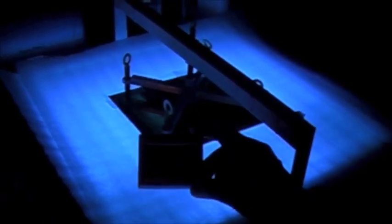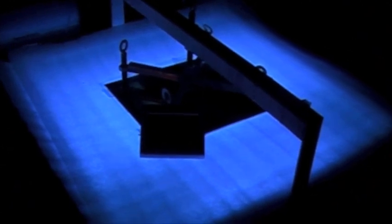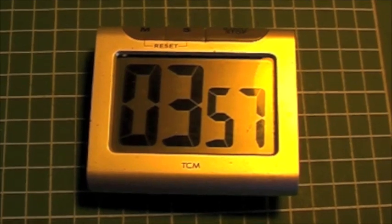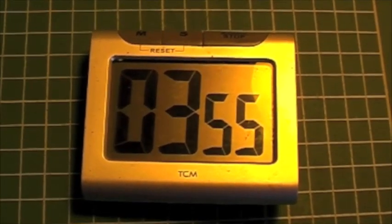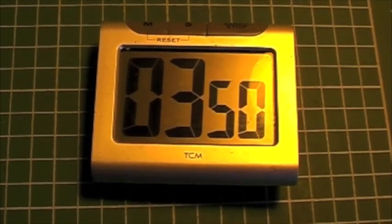We now have ultraviolet light exposing the layer that we applied to the metal through the plastic film, through the clear plastic film. For this particular exposure we're using a digital timer counting down from four minutes. So that's a four minute exposure.